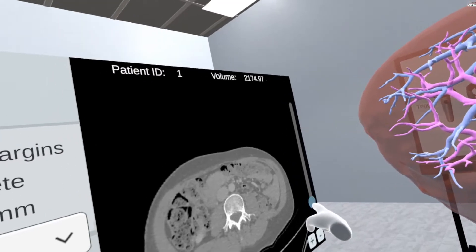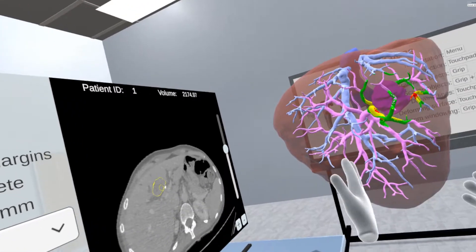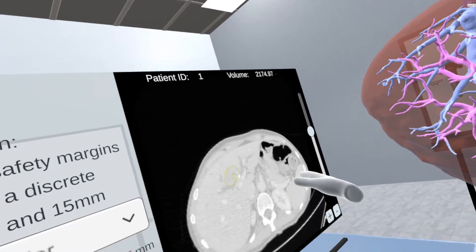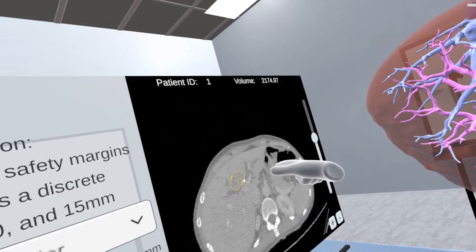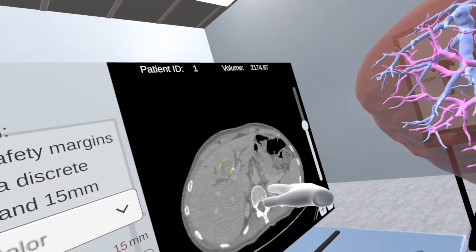Since the tumors and vascular systems are important for resection planning, the system also allows the users to explore the patient data in 2D view. The users can move with their VR hands representation to adjust the image brightness and contrast for viewing details of inner structures.